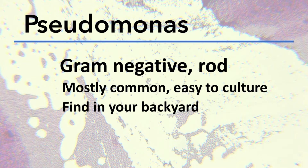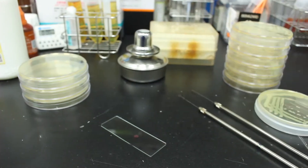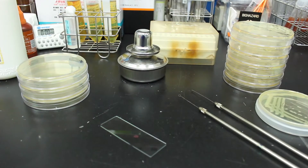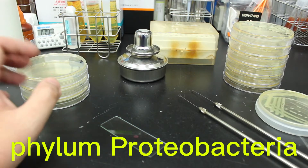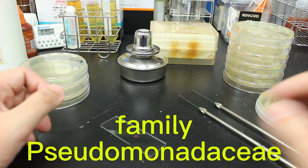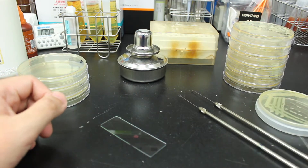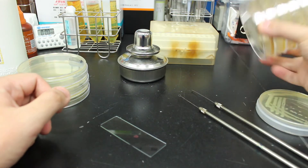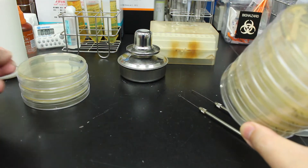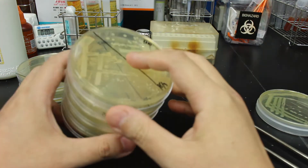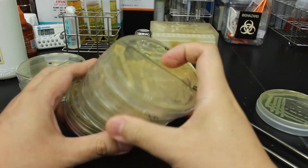One interesting thing about Pseudomonas is that people used to think these bacteria are all strictly aerobic. But it turns out that's not always the case. Pseudomonas belongs to the Phylum Proteobacteria, family Pseudomonadaceae. It has almost 200 different species, and most of them are quite common bacteria and easy to culture, which makes them very good research material.